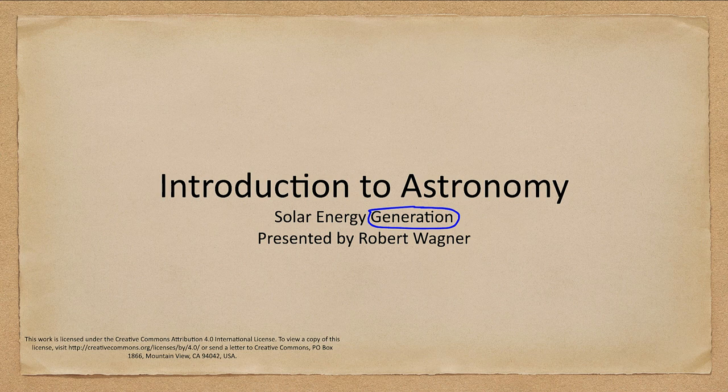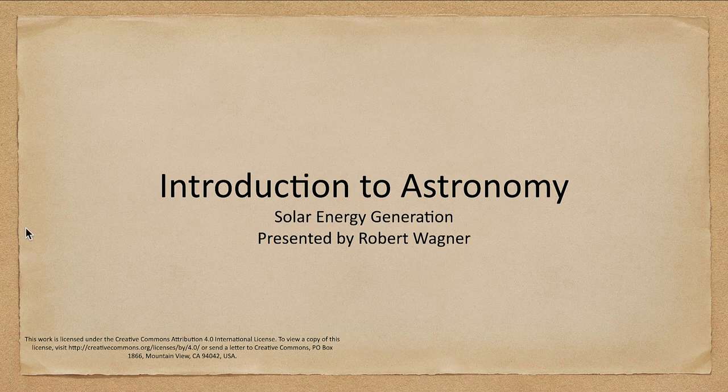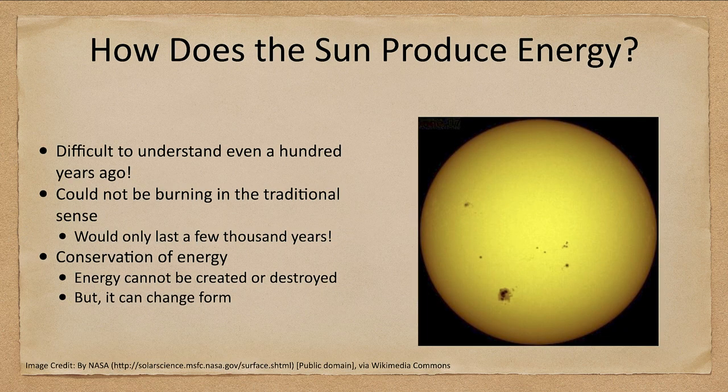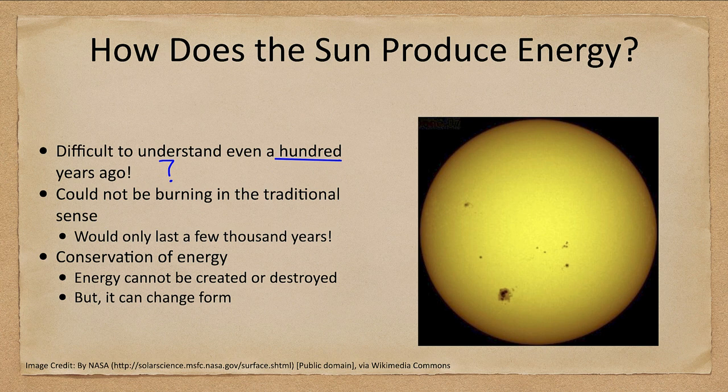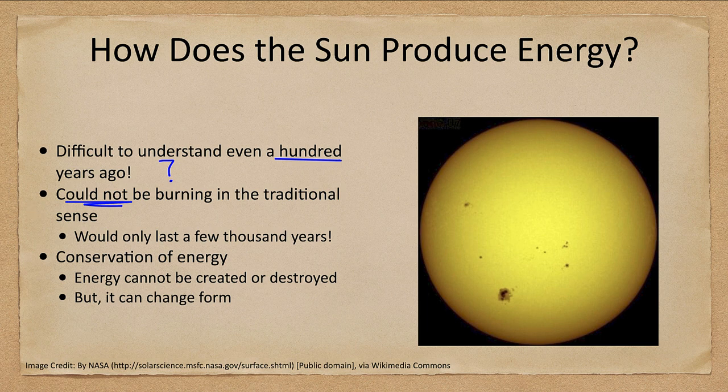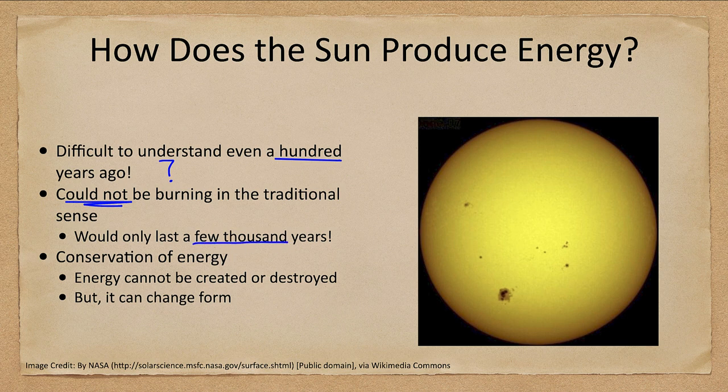So how does our Sun produce energy? Well there have been some thoughts about this but even a hundred years ago this was something difficult to understand. We knew that it could not be burning in the traditional sense that we associate here on Earth because that would only last a few thousand years and we already knew that the Earth was far older than that.